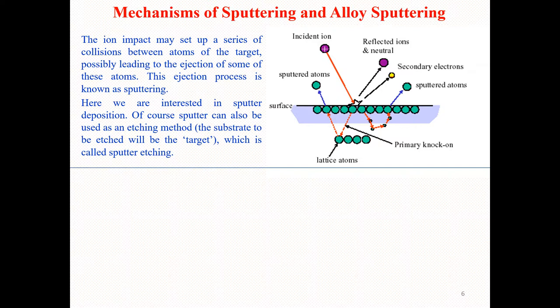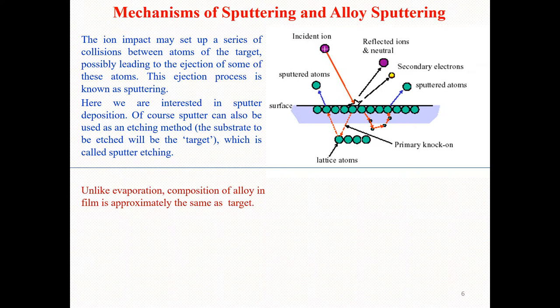We are interested in sputter deposition, but sputtering can also be used as an etching method. We already discussed how sputtering can be utilized as an etching process — once you have a particular thin film and want to do etching, that can also be achieved via the sputtering process, and that etching process is basically called sputter etching.